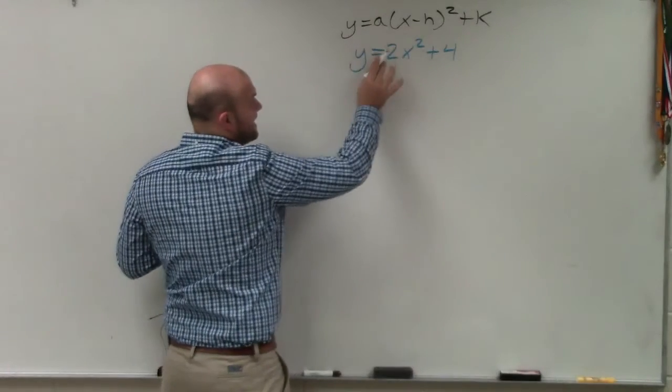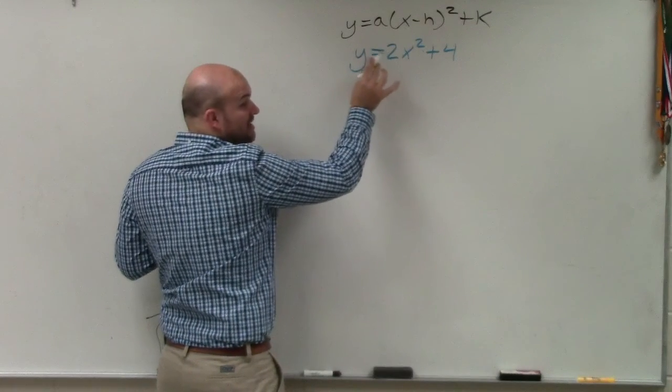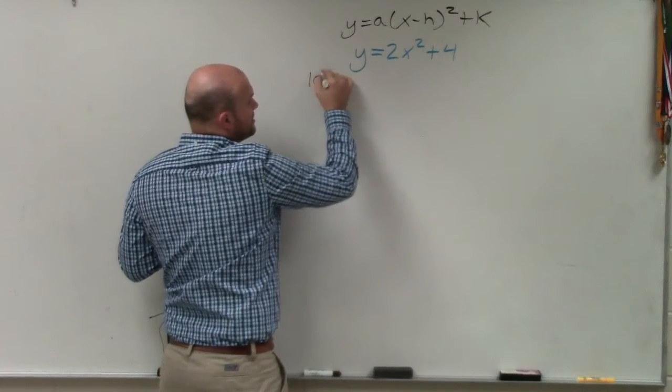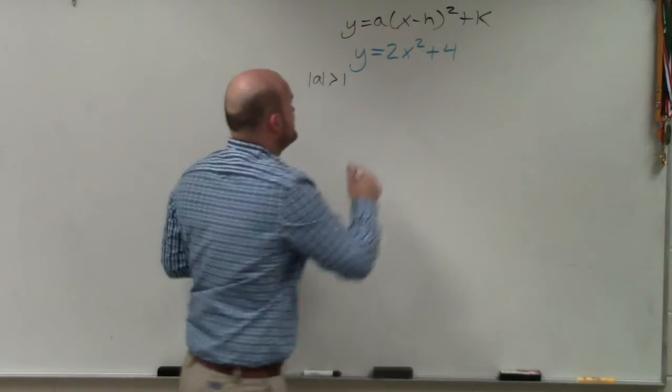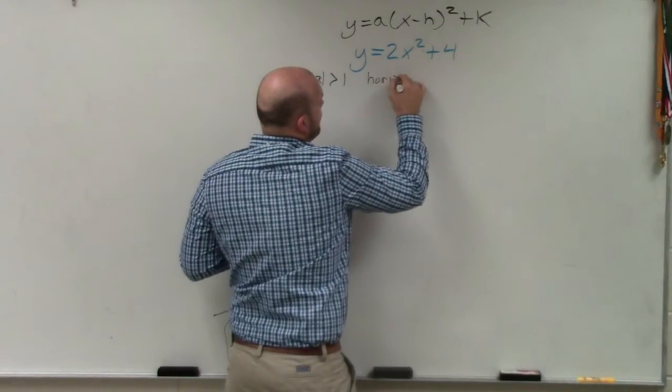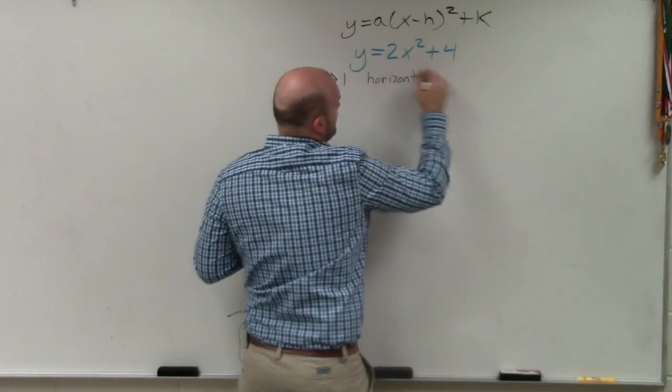You can see that a, the absolute value of a, is greater than 0. This was in your notes. When the absolute value of a is greater than 0, it's a horizontal compression.